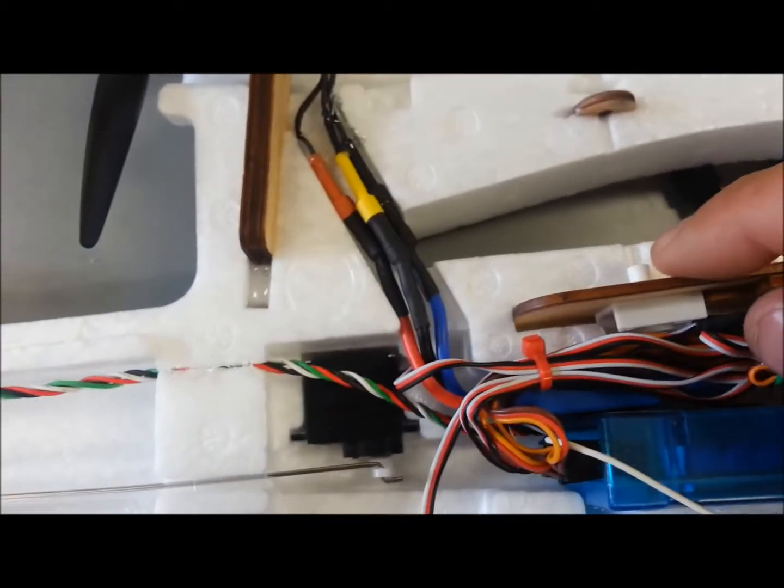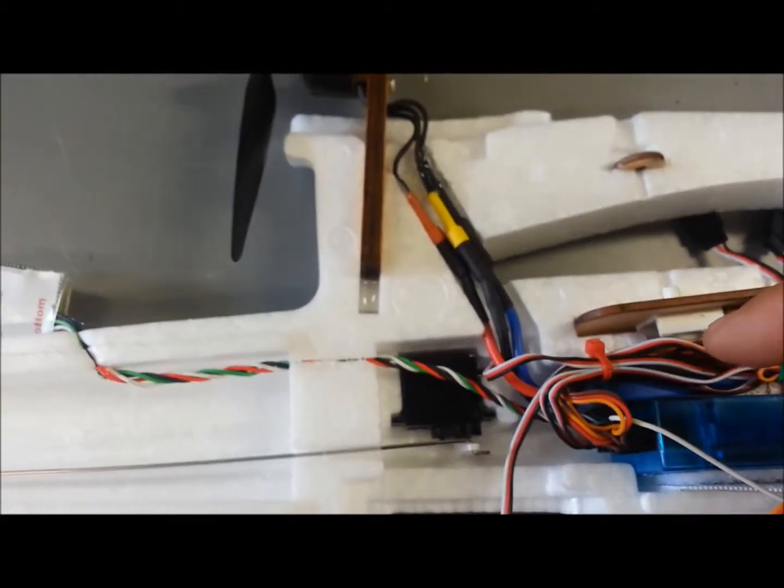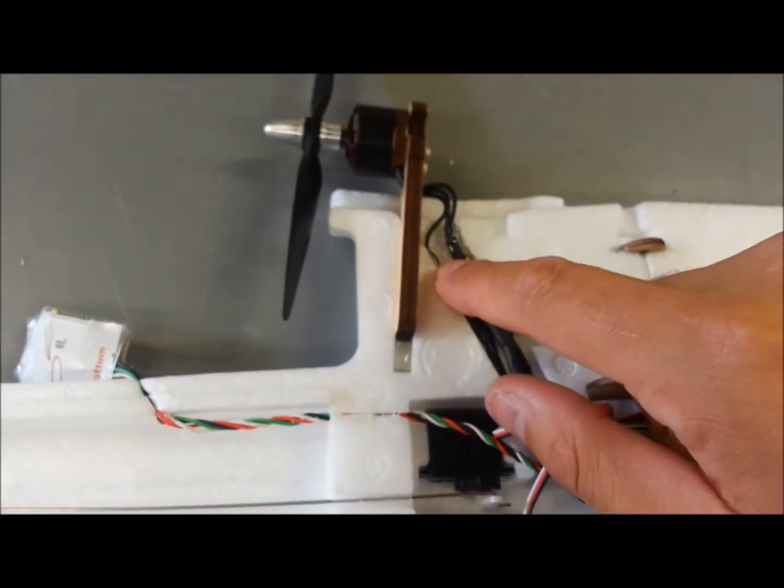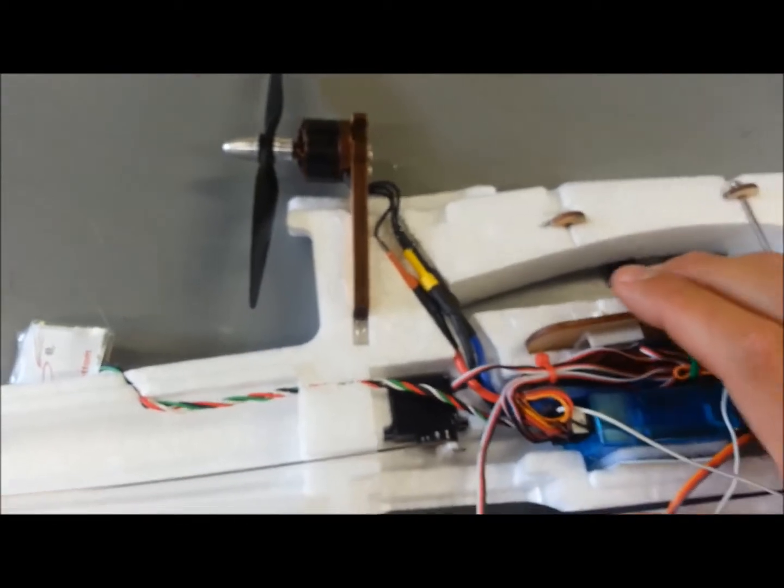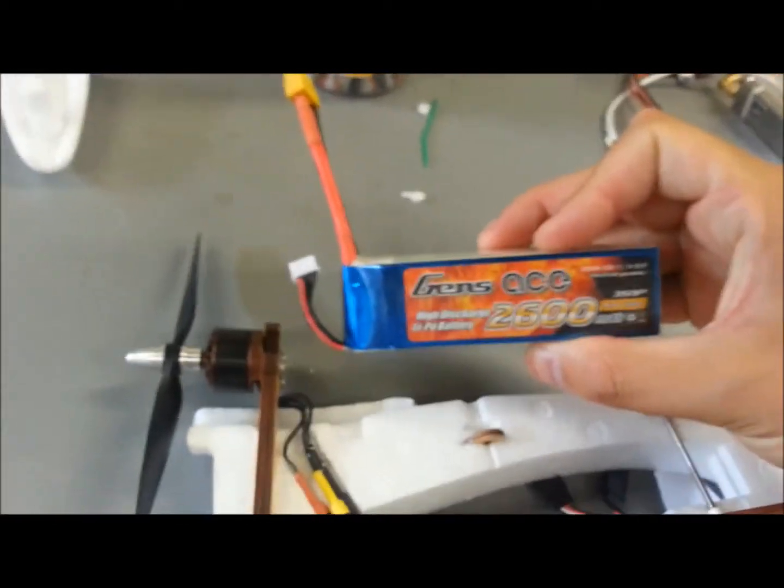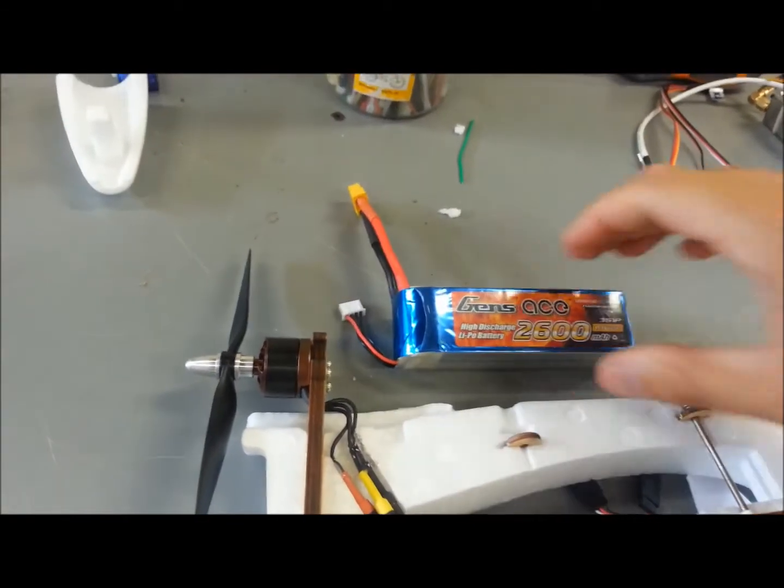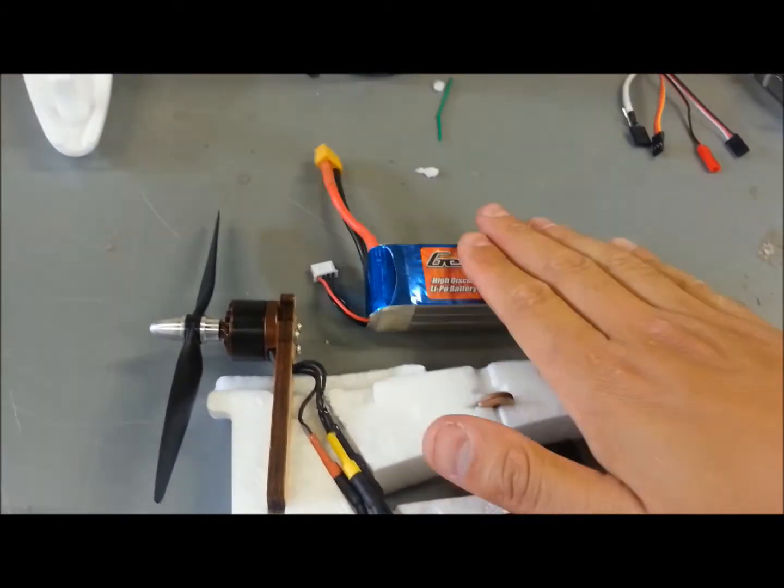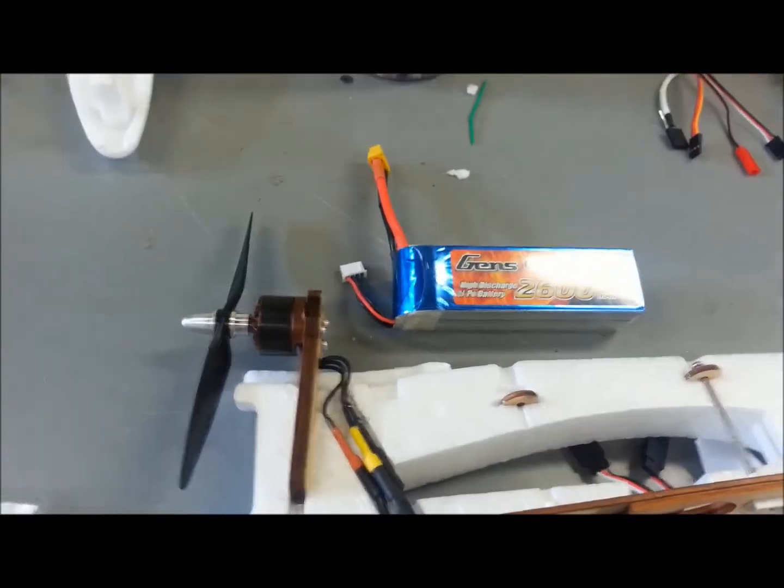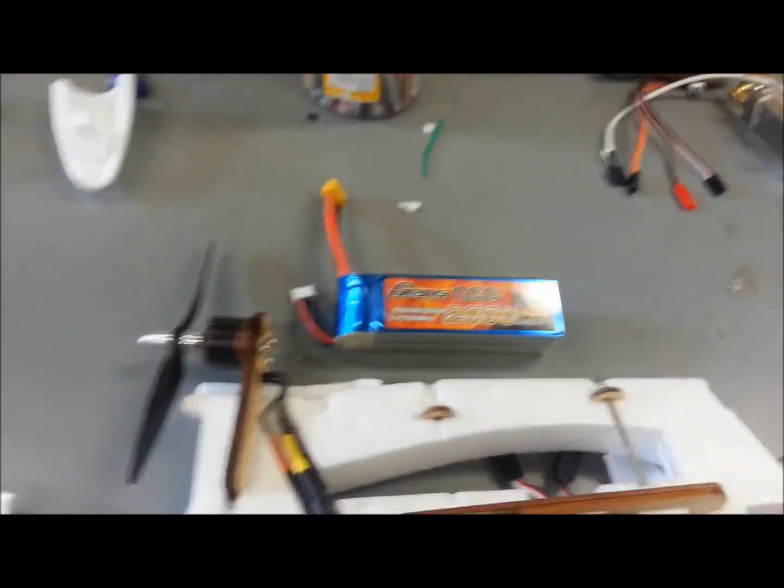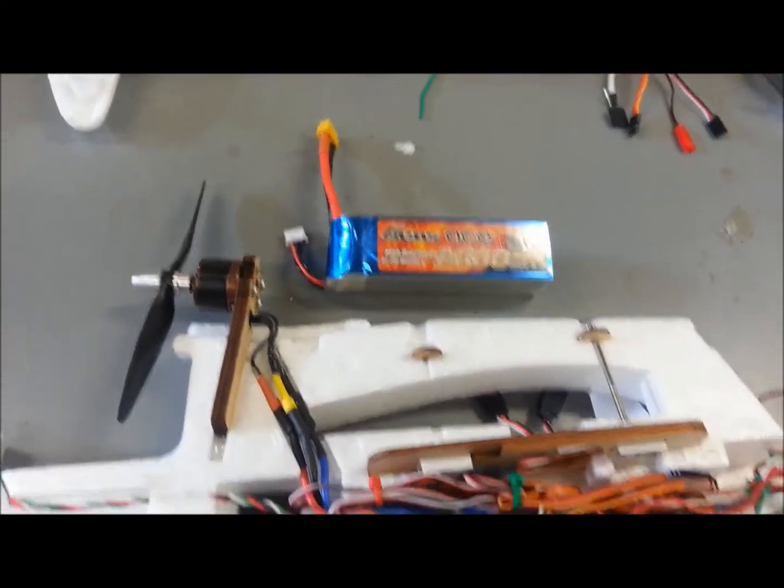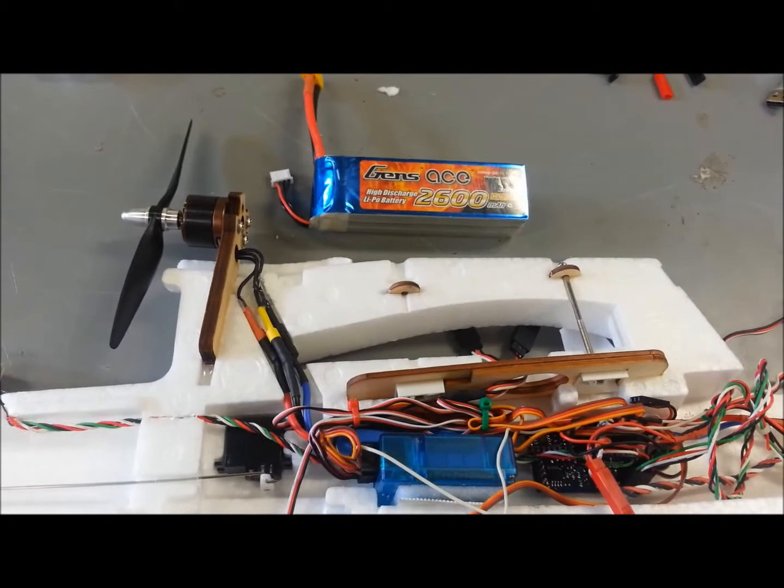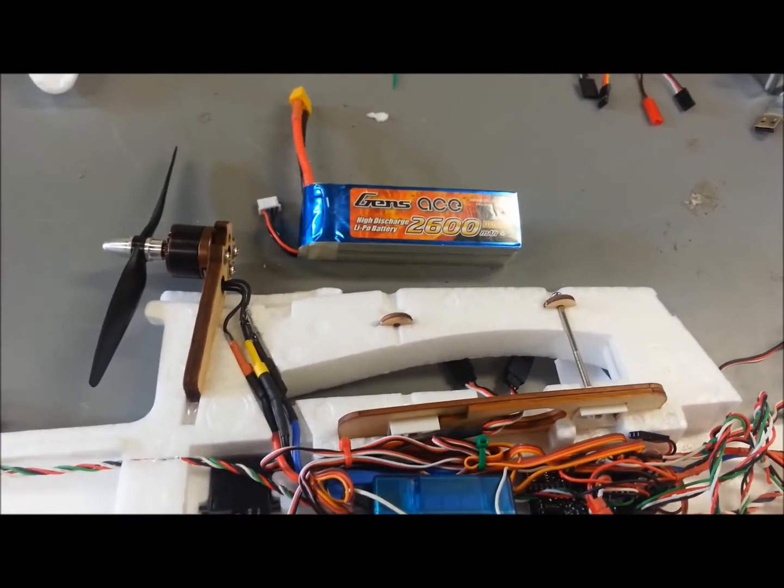I'm running a Hobby King 30 amp ESC. With my watt meter, I was able to test that this pulls about 19 amps, which is pretty efficient for an aircraft this big. I'll be running a Genz Ace 2600 milliamp 3S 25C LiPo. So with this power setup and this battery pack here, I'm looking to get about 15 to 20 minute flight time, about 35 to 40 miles per hour. I'll find out the final specs on the speed and efficiency once we get this thing in the air.